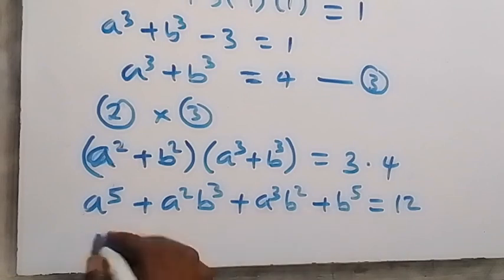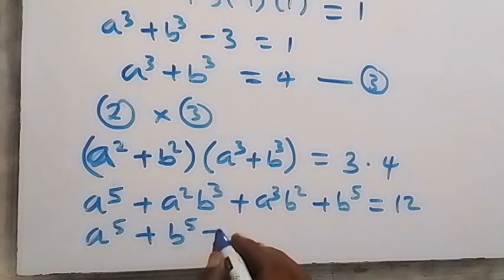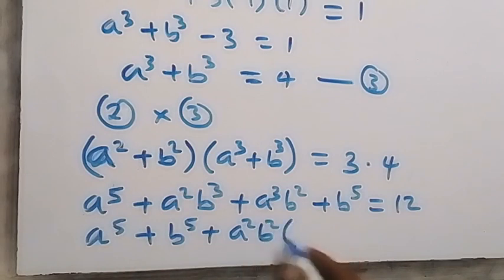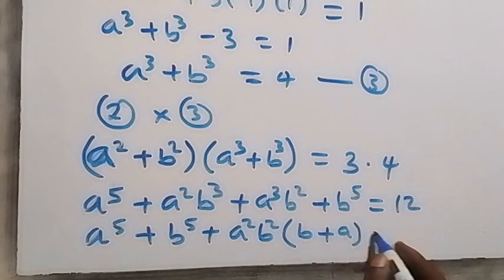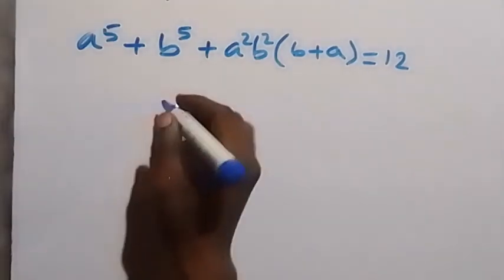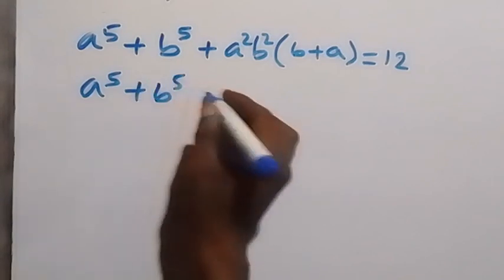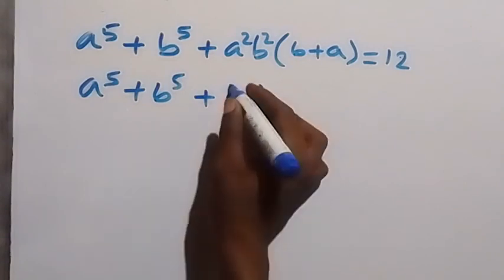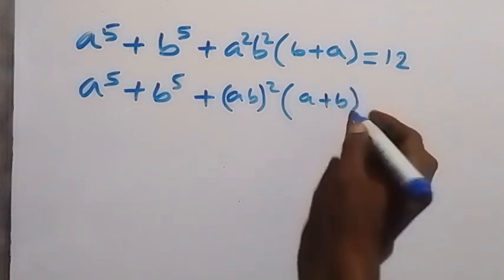Rearranging, we bring the power 5 terms together: a raised to power 5 plus b raised to power 5, then factoring the remaining terms we can bring out a squared b squared, leaving b plus a, so we have a raised to power 5 plus b raised to power 5 plus (ab) squared times (a plus b) equals 12.